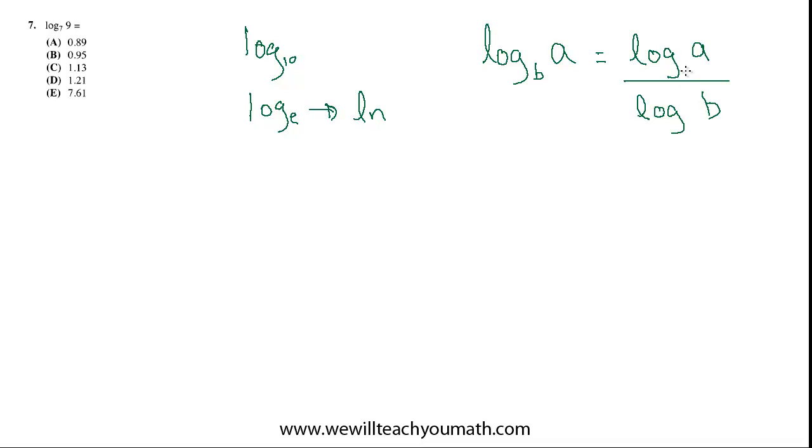Now, notice I didn't say what base we're using. I just took log of A divided by log of B. That's because it doesn't matter. This could be any base we want. So, what we do is we choose a base that's convenient for us. We choose a base that our calculators can actually do. So, by not writing anything, you're to assume that I mean log base 10. But it wouldn't be wrong if you used log base E or log base anything you'd like. This will always work for any base.